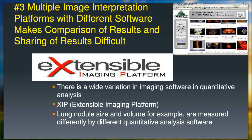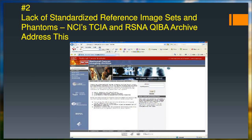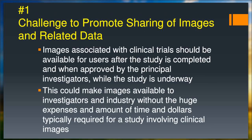The next challenge is the difficulty with multiple different software and interpretation platforms. If I make a measurement on my workstation, you may get a different diameter or volumetric measurement on yours. There really needs to be the capability of uniform methods cutting across different vendors for making measurements. The next informatics challenge is lack of standardized reference image sets. Both the NCI with the TCIA — the Cancer Imaging Archive — and the RSNA's QIBA Archive attempt to address this, helping determine the error or variability in measurements we make.